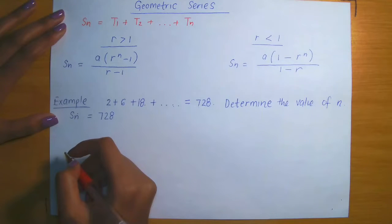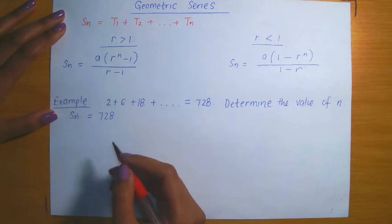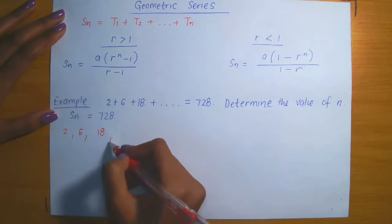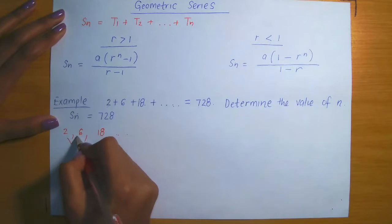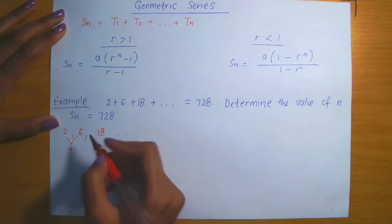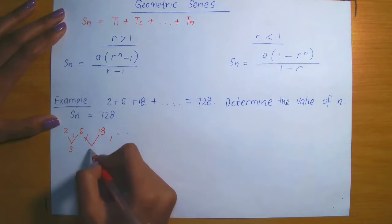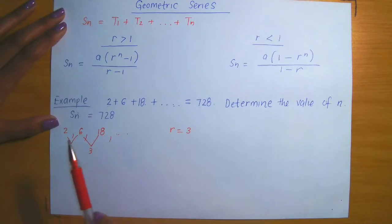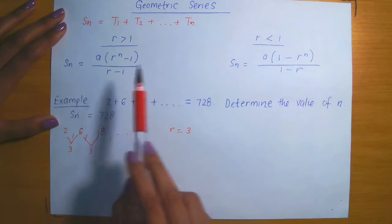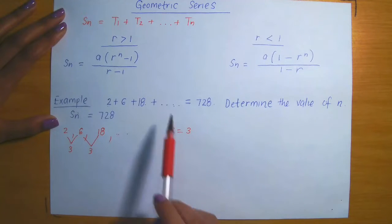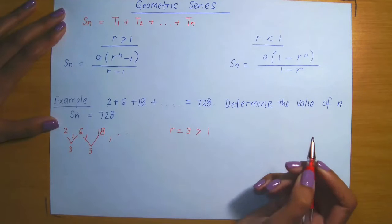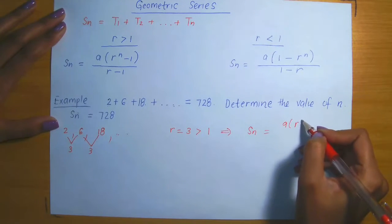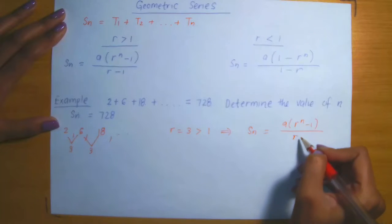The sequence has terms 2, 6, and 18. Is this a geometric sequence? Let's check the ratios: 6 divided by 2 is 3, and 18 divided by 6 is also 3. So we have a common ratio r equals 3. Since r equals 3 is clearly greater than 1, the sum to n formula we will use is: a times (r^n minus 1) divided by (r minus 1).